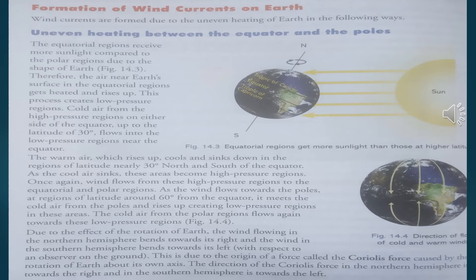This creates low pressure regions near the equator. High pressure areas on either side of the equator, up to a latitude of 30 degrees, flow air into the low pressure area near the equator. The polar regions are not very warm while the equator becomes very warm. The air at the equator heats up, moves upward, and the low pressure area is filled by cold air flowing in from both polar regions towards the equator.